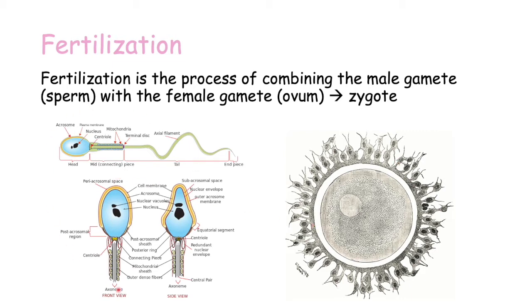As for the sperm, we have quite a complicated diagram here. We don't need to know about all these different structures, however know that the sperm has a head, a mid connecting piece which is full of mitochondria as the sperm needs a lot of energy to swim, and a tail that allows for its mobility. In the head we have this important structure called the acrosome, shown here in orange, which contains enzymes that will be important to digest through the zona pellucida.